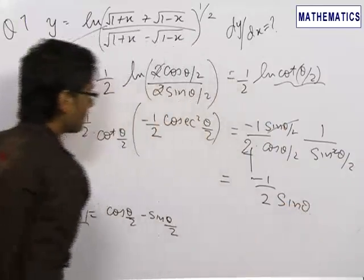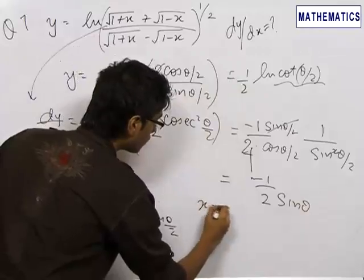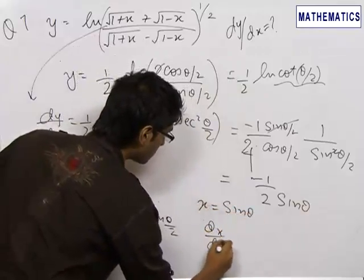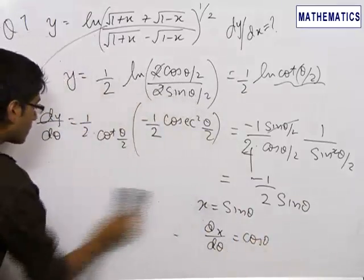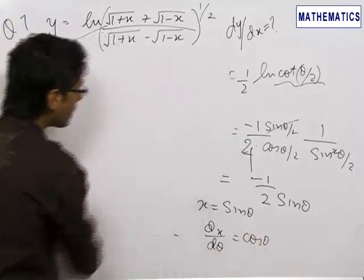And when we had y equals, or rather x equals sin θ, so we get dx/dθ equals cos θ. Now we know that dy/dx is equal to dy/dθ divided by dx/dθ.